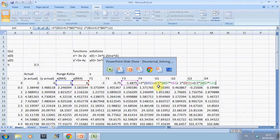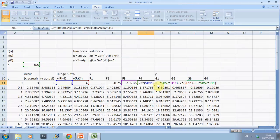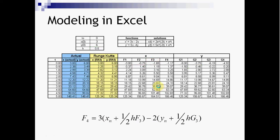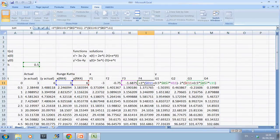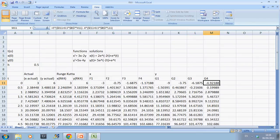f4 uses 3x plus a full step times HF3, minus 2y plus a full step times HG3. And there's f3 and there's f4. The same structure applies for the y equations.